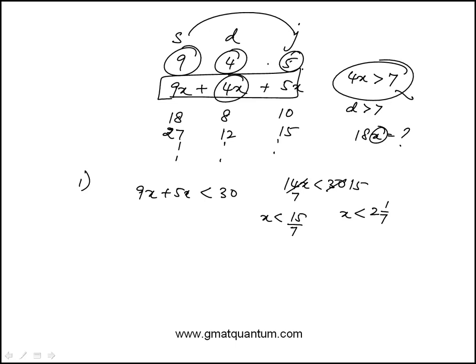x has to be greater than 1 because 4x is greater than 7, so x is greater than 7 fourths, which is 1 and 3 fourths. The only possible value is x equals 2, and you can see it from here as well.